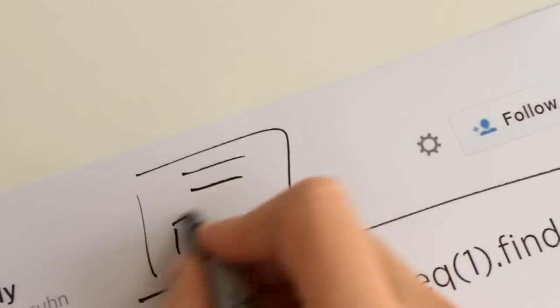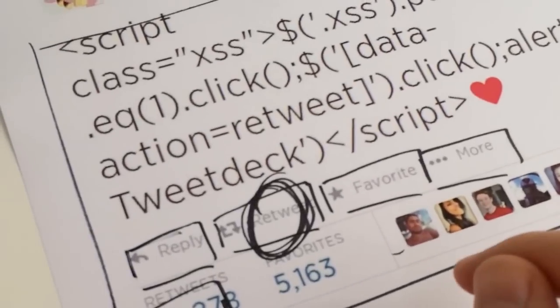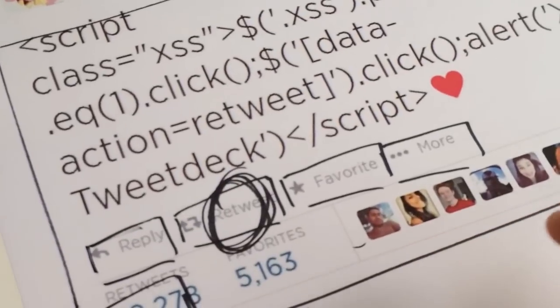New command. Because that doesn't immediately retweet. It pops up a dialog box. It says, are you sure you want to do this? Dollar sign. Find me. Data action. So find me something which has a data attribute, which this button does, equal to action of retweet. Well, hey, that's that button just there. Click it. Boom. Retweet done.